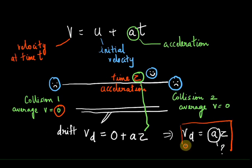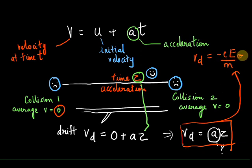So if I use this value of acceleration we just derived in my Vd is equal to A tau relation, it becomes something like this. So now I know the relationship between the drift velocity, the electric field and the relaxation time.